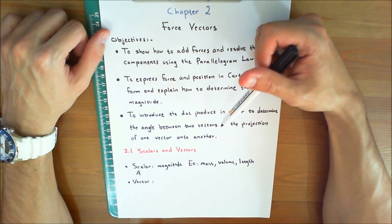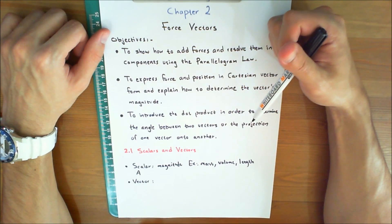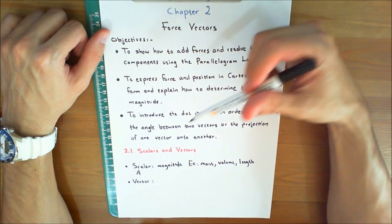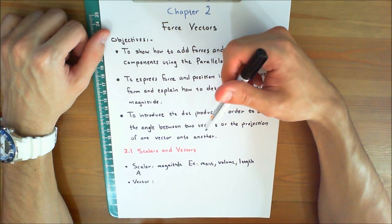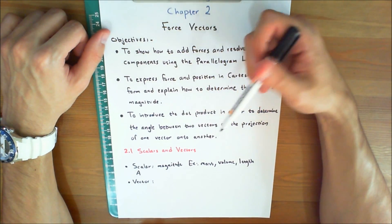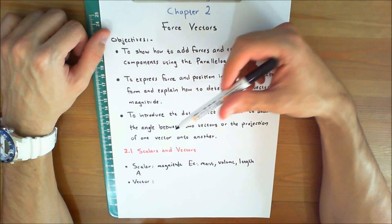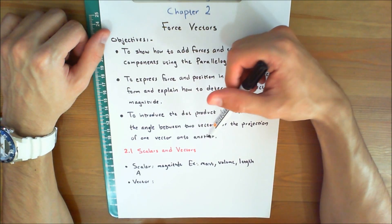And finally, to introduce the dot product in order to determine the angle between two vectors or the projection of one vector onto another.